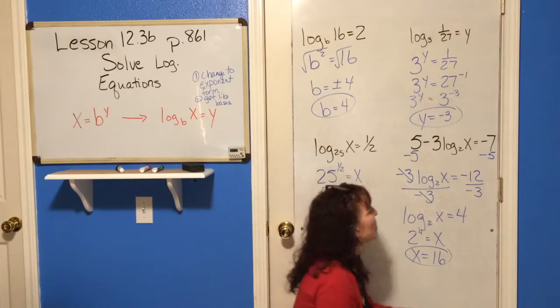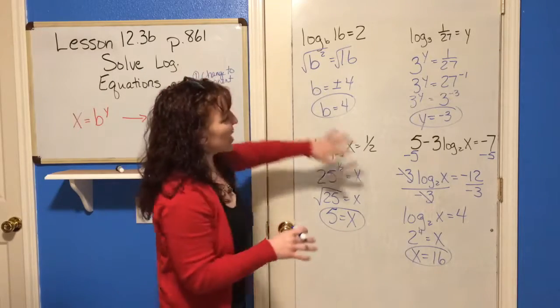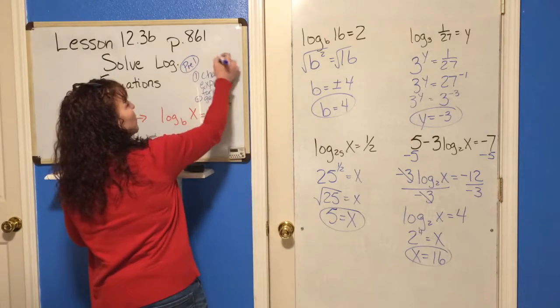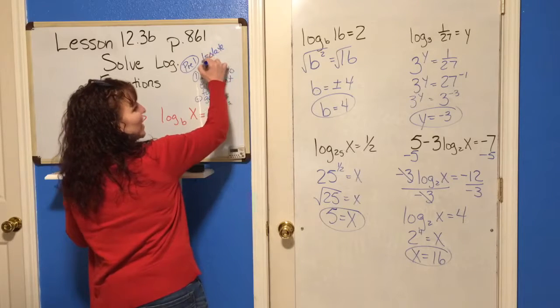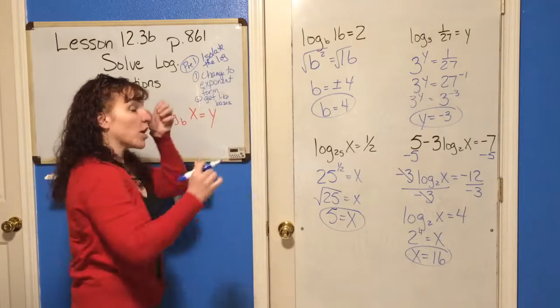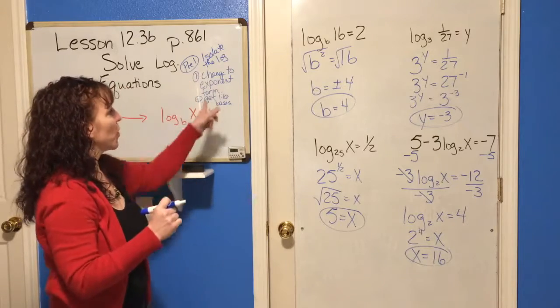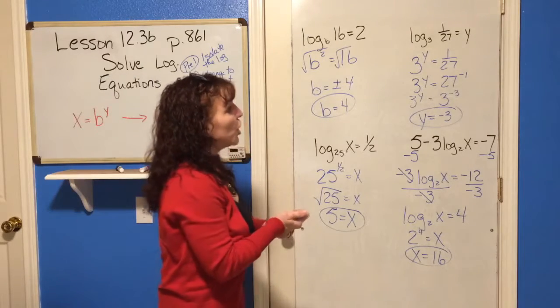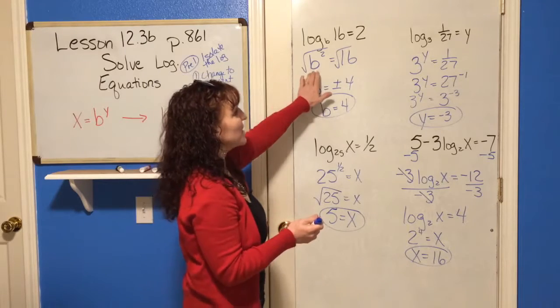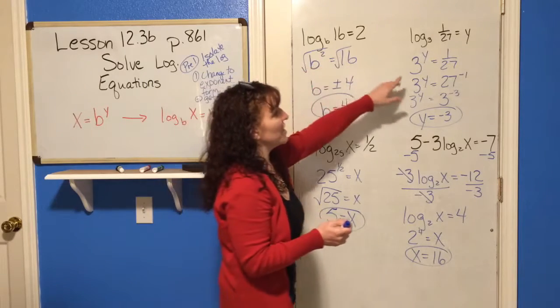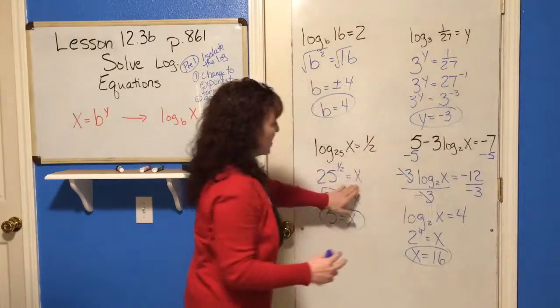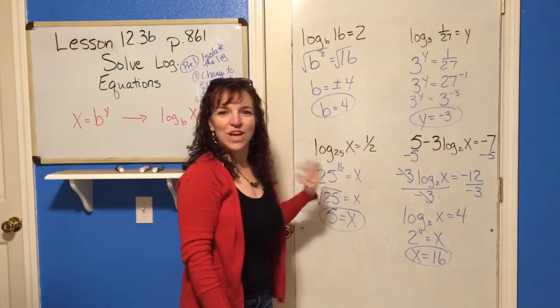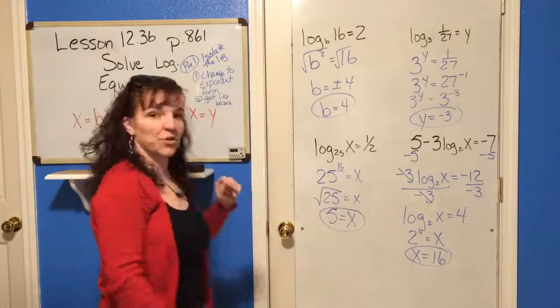You can do this. No problem at all. So, I didn't put the first step is actually to get the log by itself. So, pre-1 is to isolate the log. After the log is by itself, then you can change that into exponent form and get like bases and solve for the unknown. And now, you see that you can find the unknown no matter where it is. If it's the base, you simply take the root. If it's the exponent, you're going to get like bases. And if it's on the other side of the equation, then you simply work the equation. I think that's it for today. That was another easy one. See you next time.